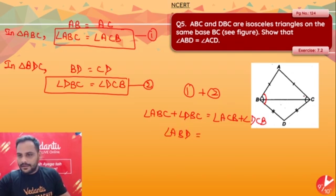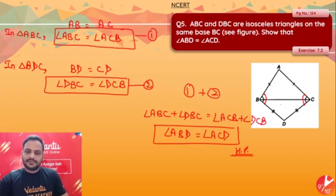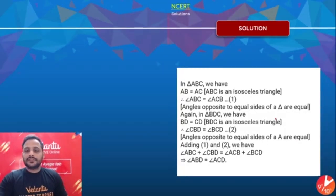ABC plus DBC is total angle ABD, and here ACB plus DCB is total angle ACD. Done, hence proved. Very easy question, right? This is how easily we can solve this question. I have shown that this angle and this angle are equal, and at the bottom side this angle and this angle are equal. So if I add both equations, ABD is equal to ACD.